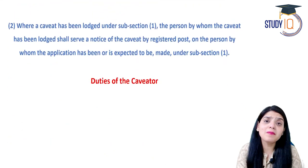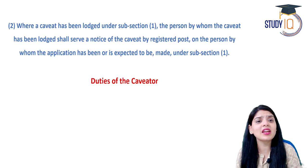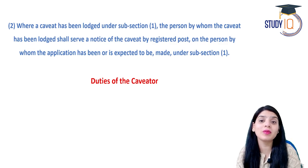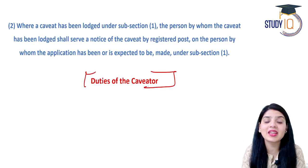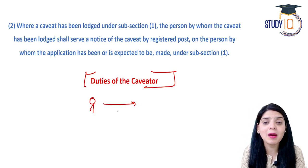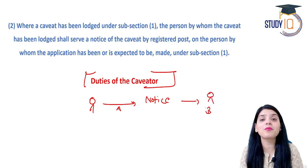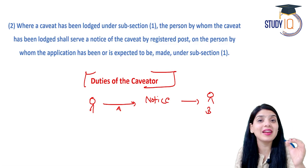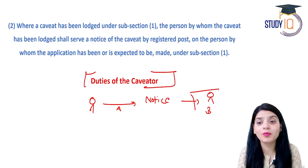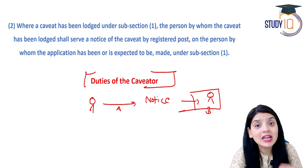Clause 2 में caveator की duties की बात की गई है। Caveator को caveat file करने के बाद यह duty होती है कि वो उस party को — जिसके खिलाफ caveat lodge की है — registered post के माध्यम से notice दे। यह notice देना caveator की जिम्मेदारी है कि वो दूसरी party को सूचित करे कि मैंने caveat file की है।